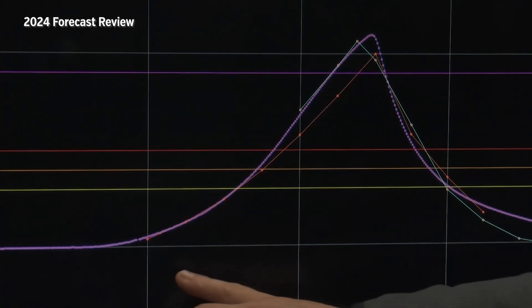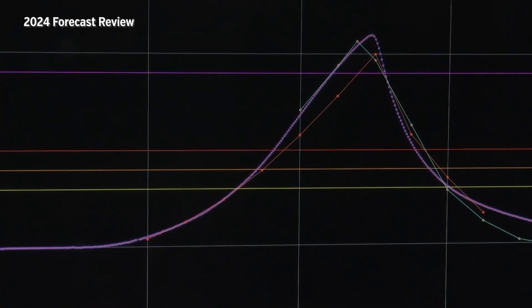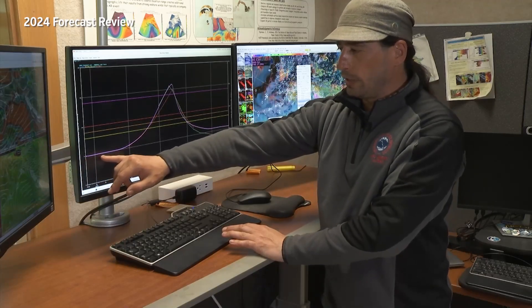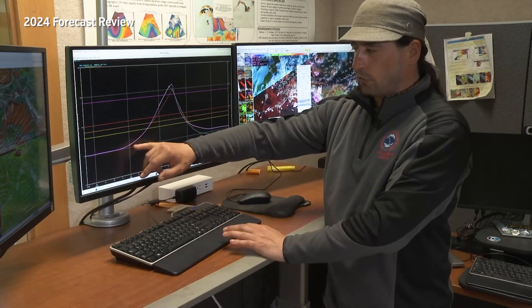This is the original forecast that we put out in 2024 when we saw the water from the basin affecting Mendenhall Lake. As you can see here, this is Mendenhall Lake where it starts low, no real changes, and then all of a sudden you start seeing this rise.